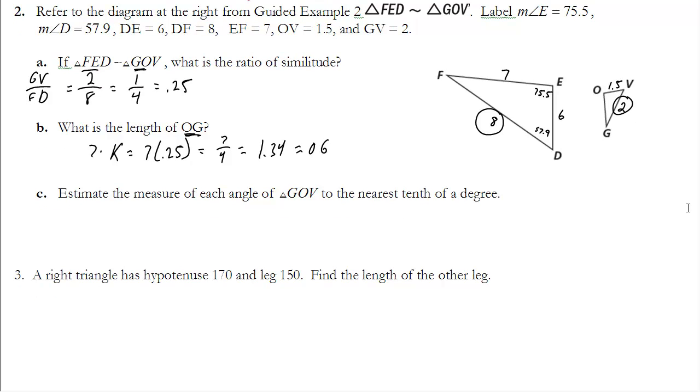Part C just asked me to estimate the measure of each angle of triangle GOV to the nearest tenth. Well, we're given two angles in this similar triangle, and I can find the third by subtracting these two from 180. So if I add these two up and subtract from 180, I believe I get 46.6. So that would be that angle. I know that angle F is congruent to the one that it corresponds with, and angle F corresponds with angle G. And since F is 46.6, G must also be 46.6.